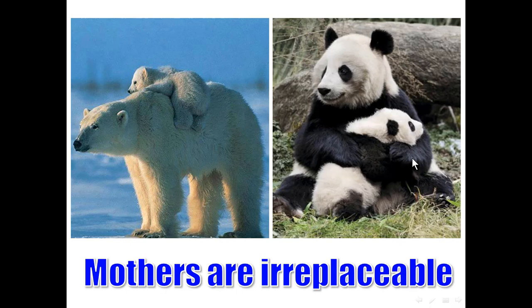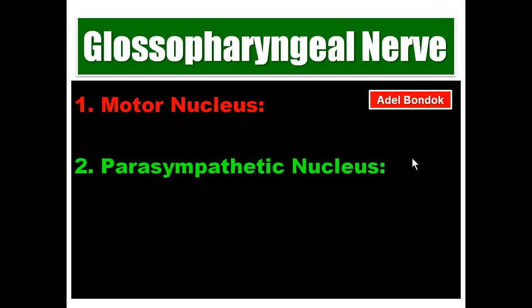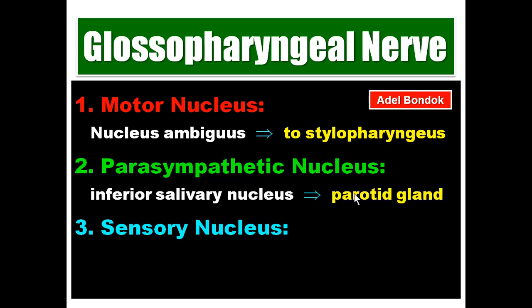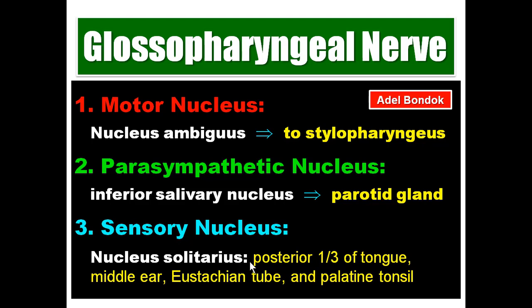Now, the glossopharyngeal nerve. Its motor nucleus is the upper part of nucleus ambiguus, which supplies the stylopharyngeus muscle. Its parasympathetic nucleus is the inferior salivatory nucleus, which supplies the parotid gland. Its sensory nucleus is the nucleus solitarius, which receives taste and general sensation from the posterior third of the tongue, from the middle ear, the Eustachian tube, and the palatine tonsil.